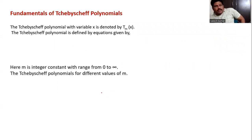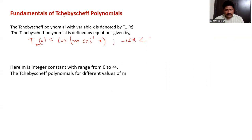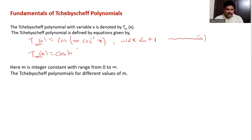Now let us discuss the Chebyshev polynomials. The Chebyshev polynomial with variable x is denoted as Tm(x). The Chebyshev polynomial is given as: Tm(x) = cos(m · cos⁻¹(x)) for -1 < x < 1 (expression A), and Tm(x) = cosh(m · cosh⁻¹(x)) for |x| ≥ 1.